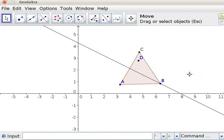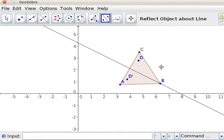Select Reflect Object About Line tool from the toolbar. Click on point D. This will highlight the point D. Click on the Perpendicular Bisector. This will produce a reflected image D' on the other side of Perpendicular Bisector. D' is a mirror image of point D. Set Trace ON for D'.